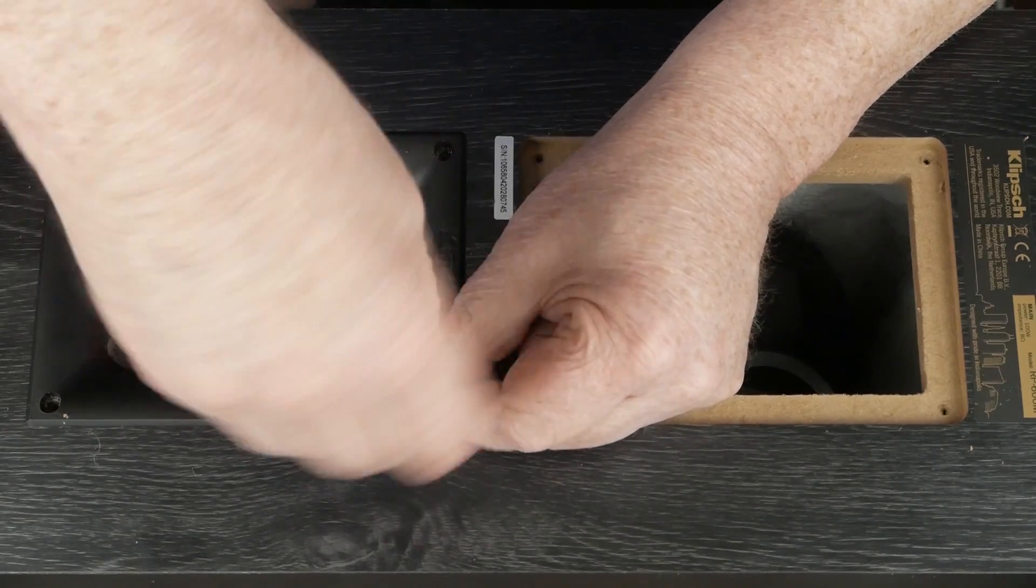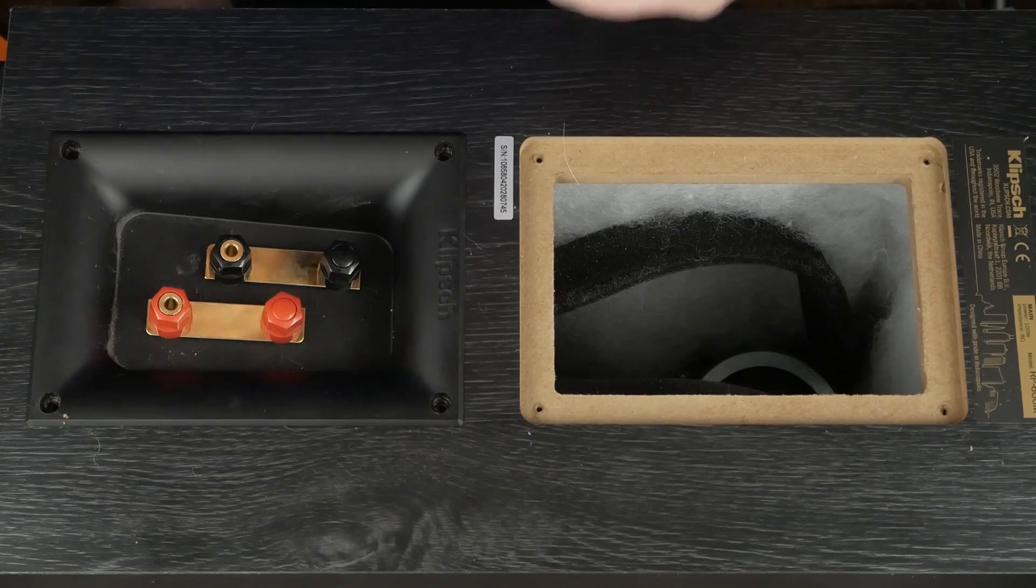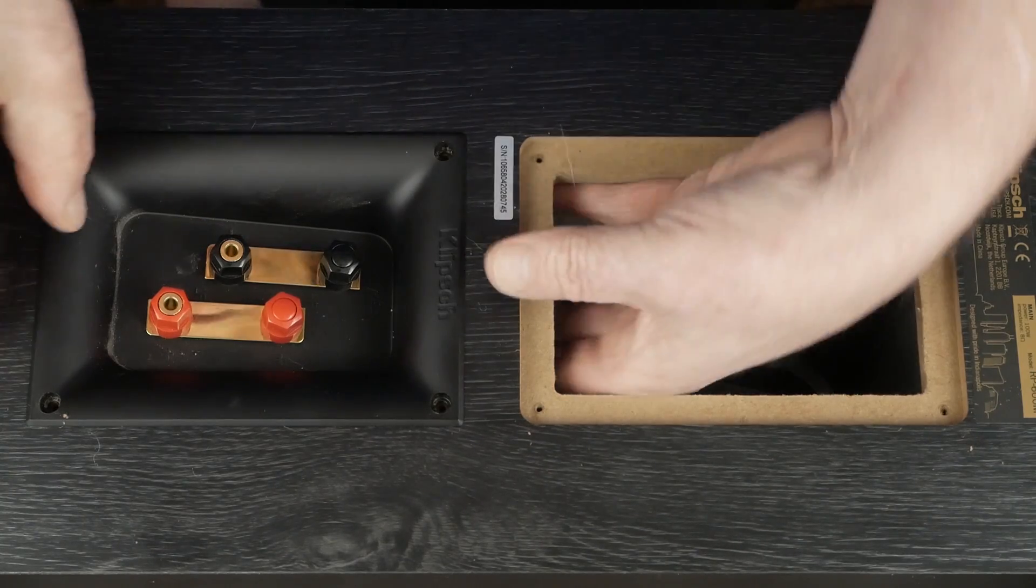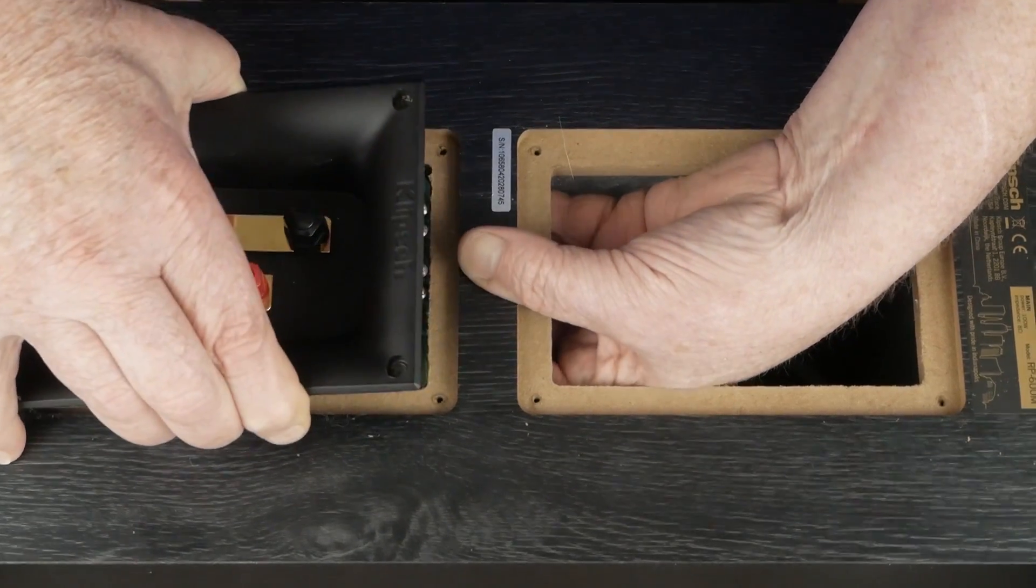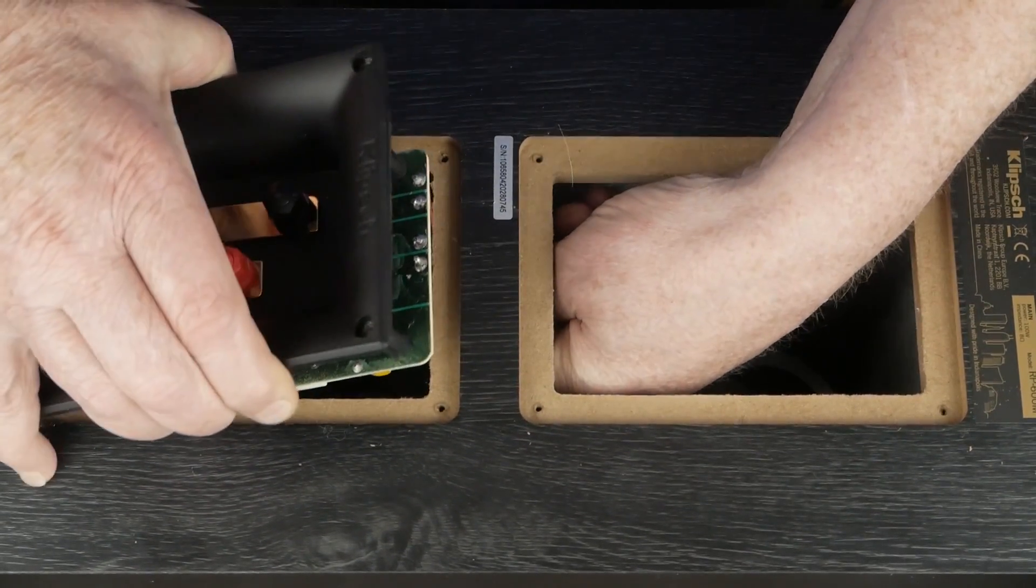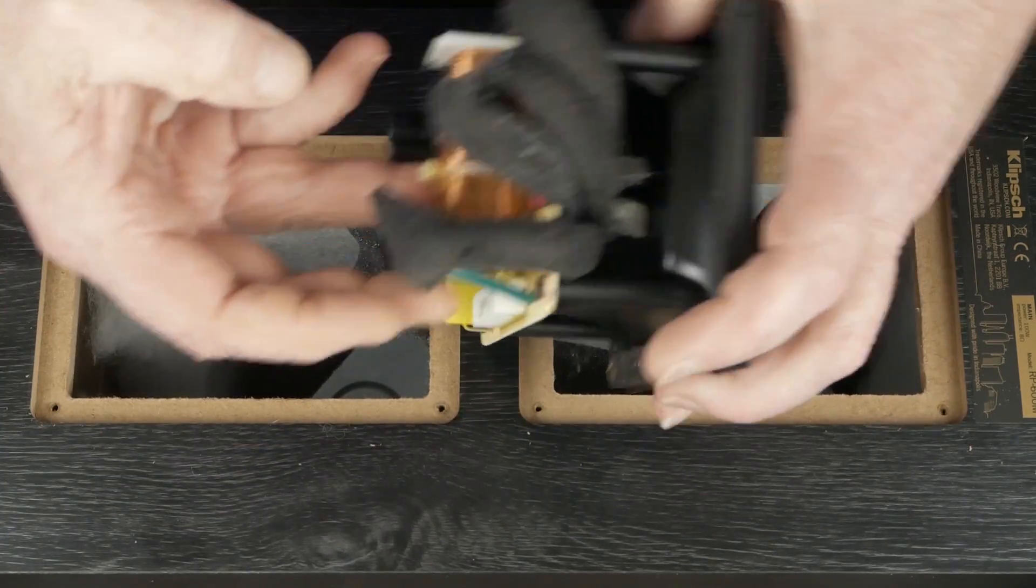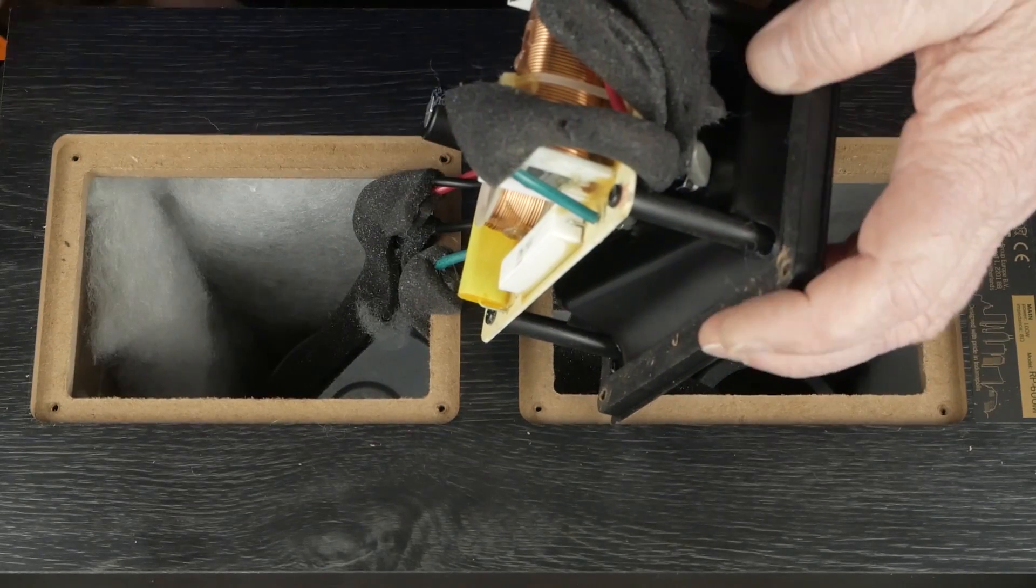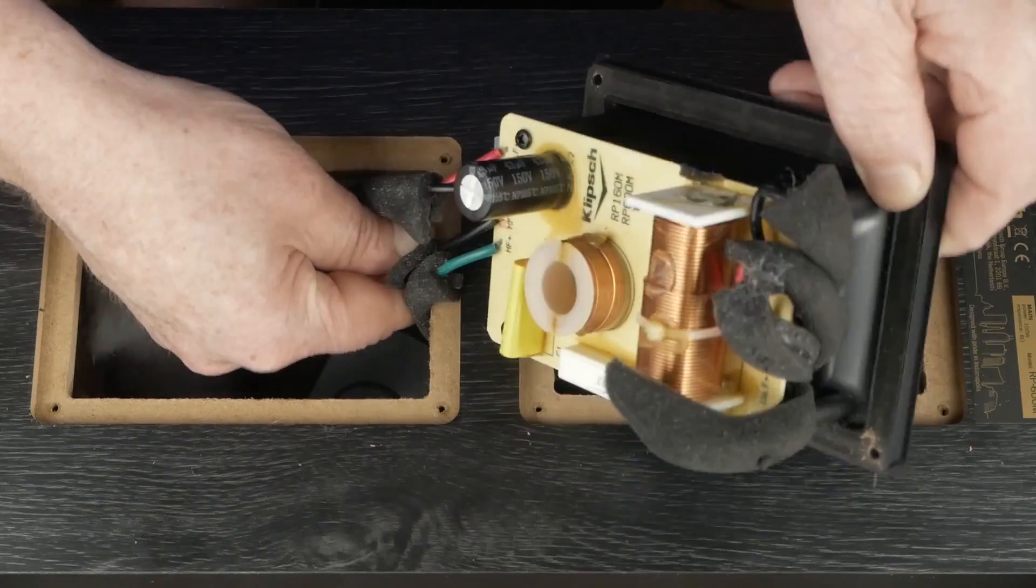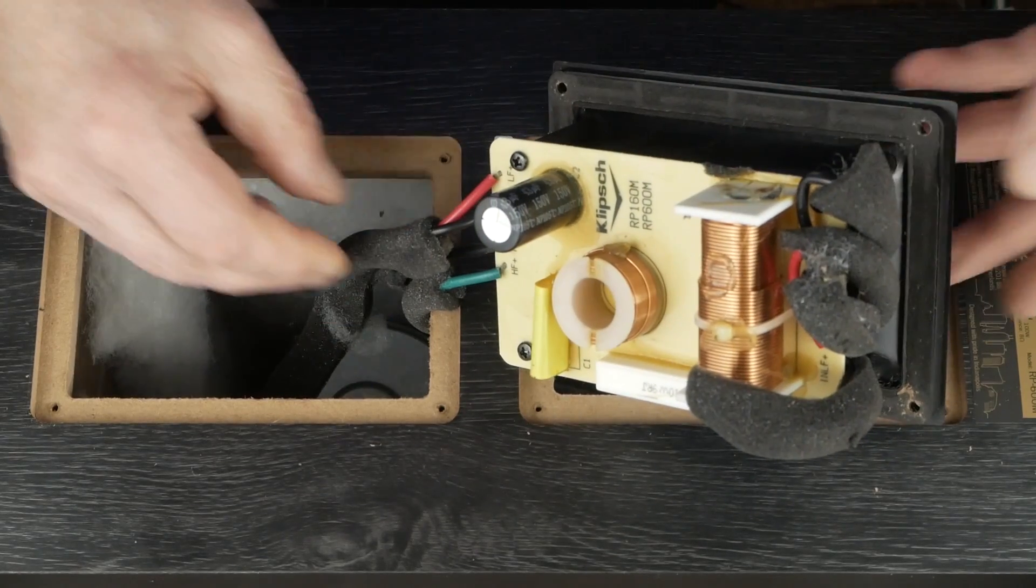So just to eliminate that as being an issue, since we're never going to be bi-amping these, I'm going to stick a jumper wire across those internally. But mainly we're going here to replace the capacitor. It's going to kind of wiggle like that, and there's the board. Kind of pull this like that and then that gives you a little more room to work with.